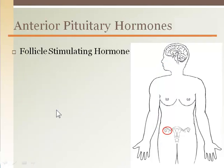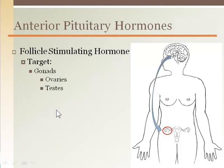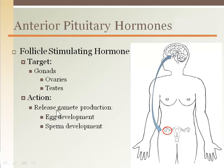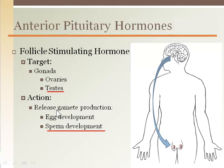Follicle stimulating hormone is released by the anterior pituitary gland, again targeting the gonads, and stimulates gamete production. In women, it targets the ovary to develop an egg for ovulation. In men, it targets the testes to increase and support sperm production. The hypothalamus regulates the gamete production cycle, which varies considerably from male to female, and will be discussed in greater detail in the reproductive system chapter.